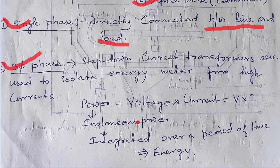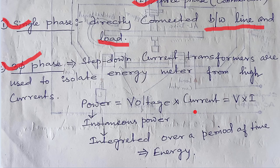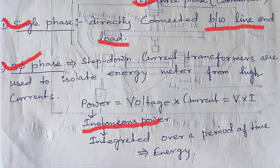Power is nothing but voltage into current, that is V into I. We can further say power is nothing but the instantaneous power, and integrated over a period of time. Agar over a period of time power ko calculate karenge, to ushe hum kahenge energy.